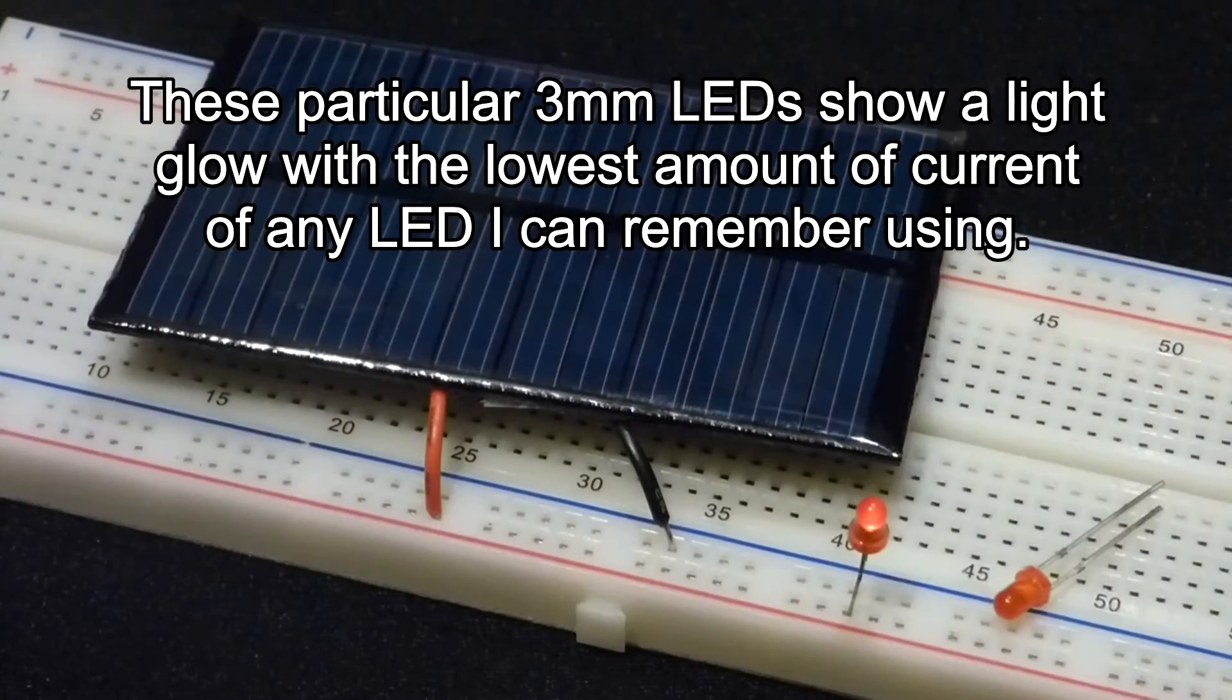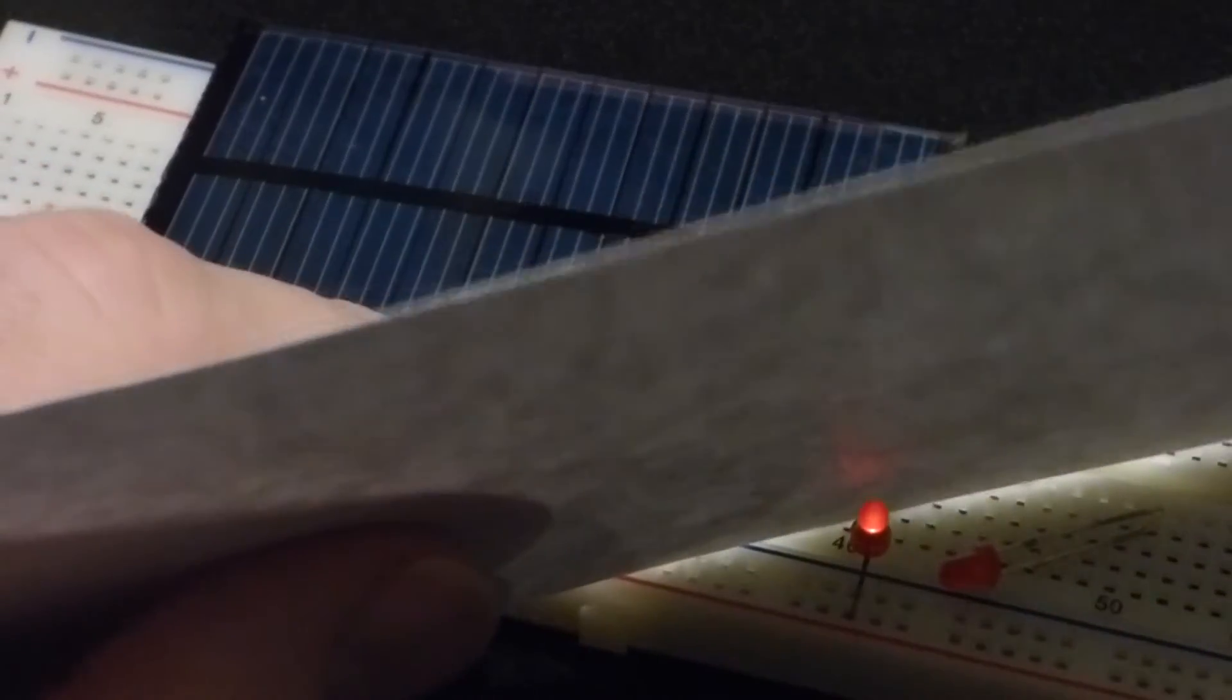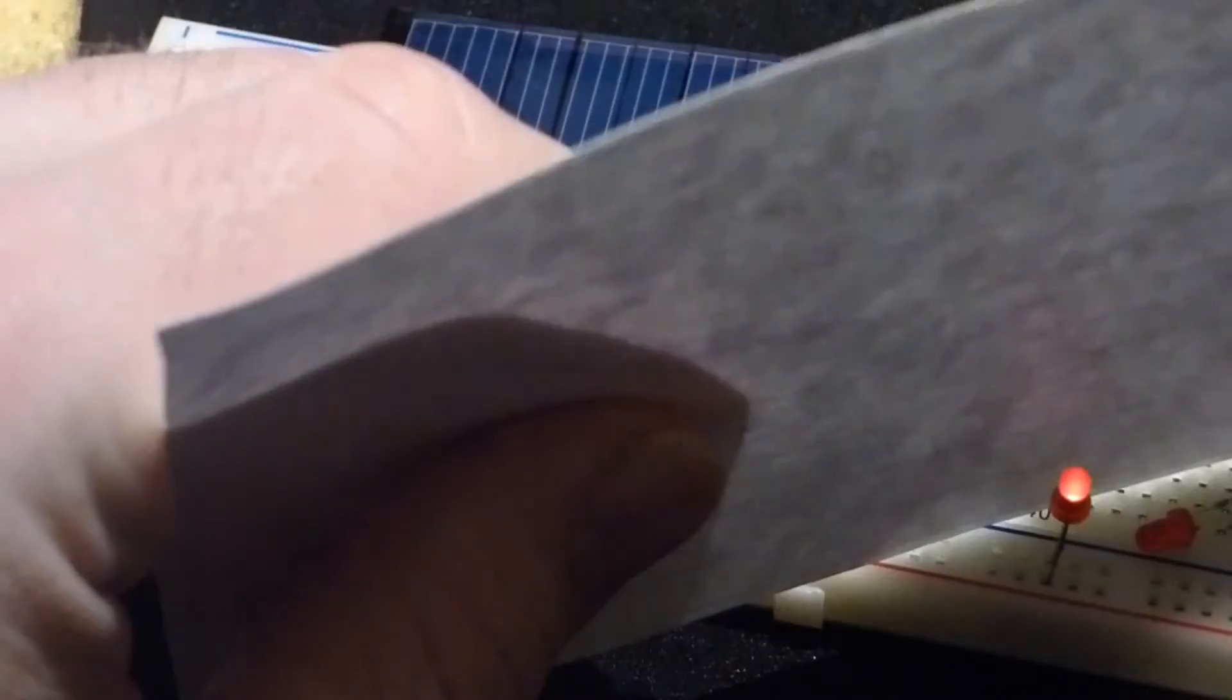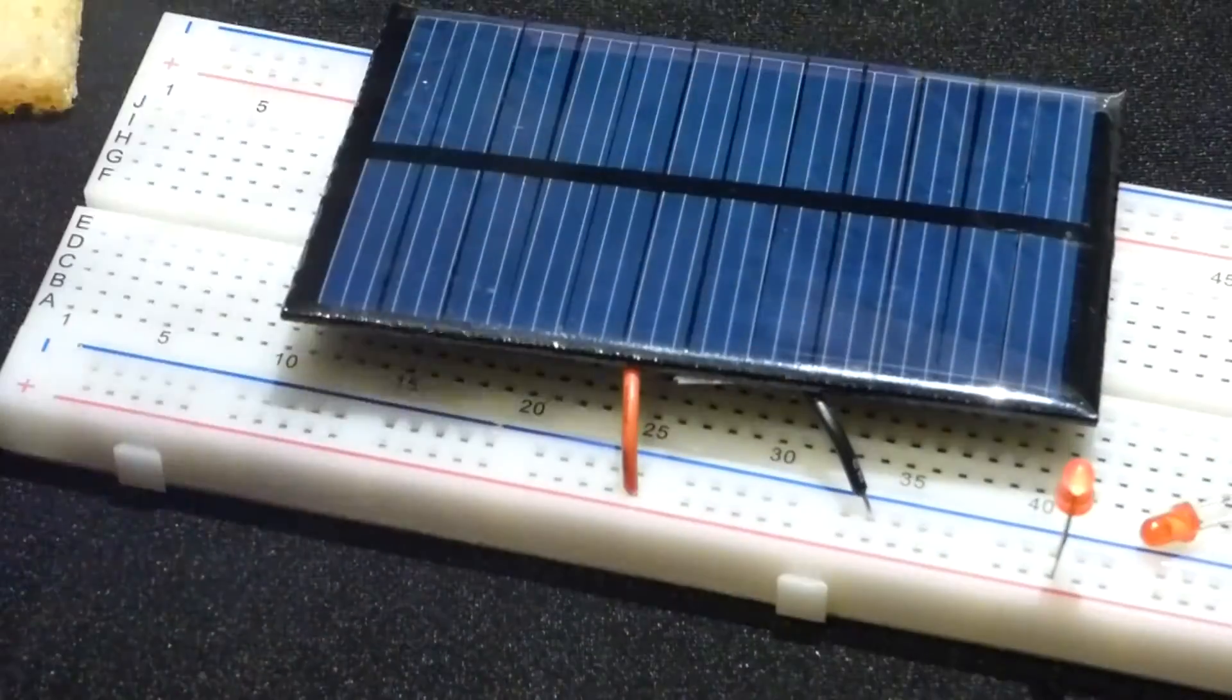These LEDs light up with just a little bit of current. So I turn the lamp up a bit. Now you can see it's quite a bit brighter. Turn the lamp even brighter, and you can see the LED gets brighter.